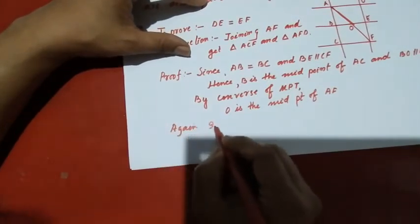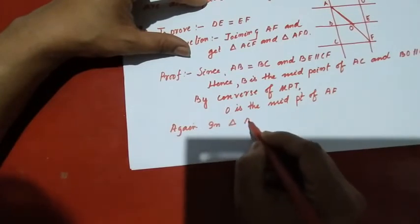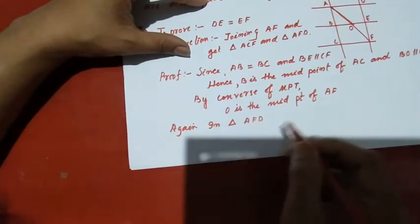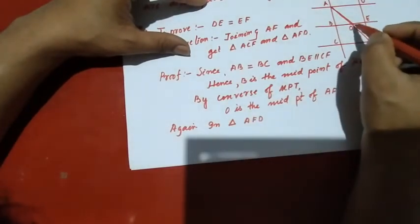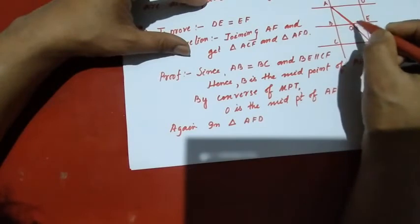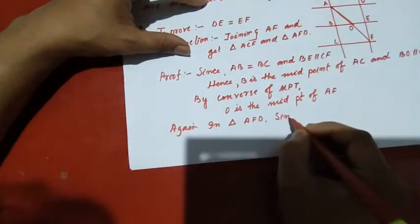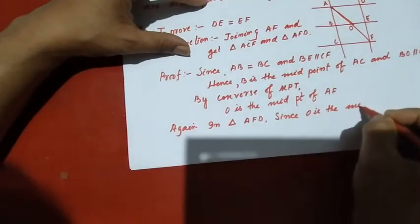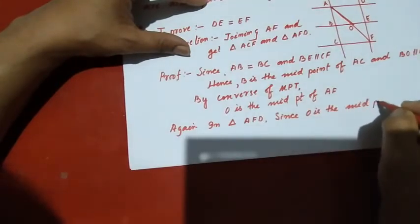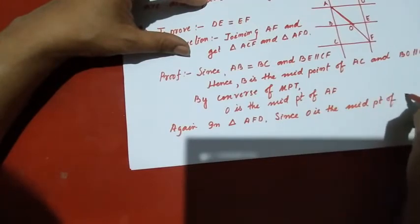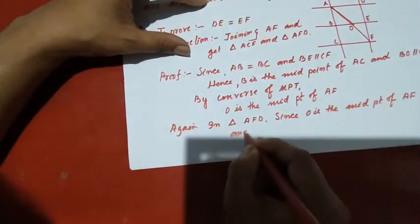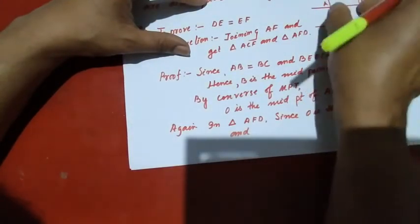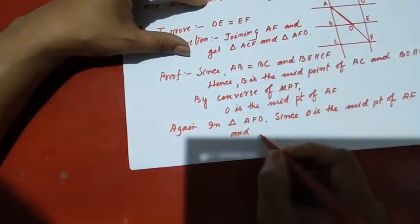Now, in triangle EFD: O is the midpoint of EF. Since O is the midpoint of EF and AD is parallel — by the converse of the midpoint theorem, O is also the midpoint of the corresponding segment, and the line through O is parallel to AD.